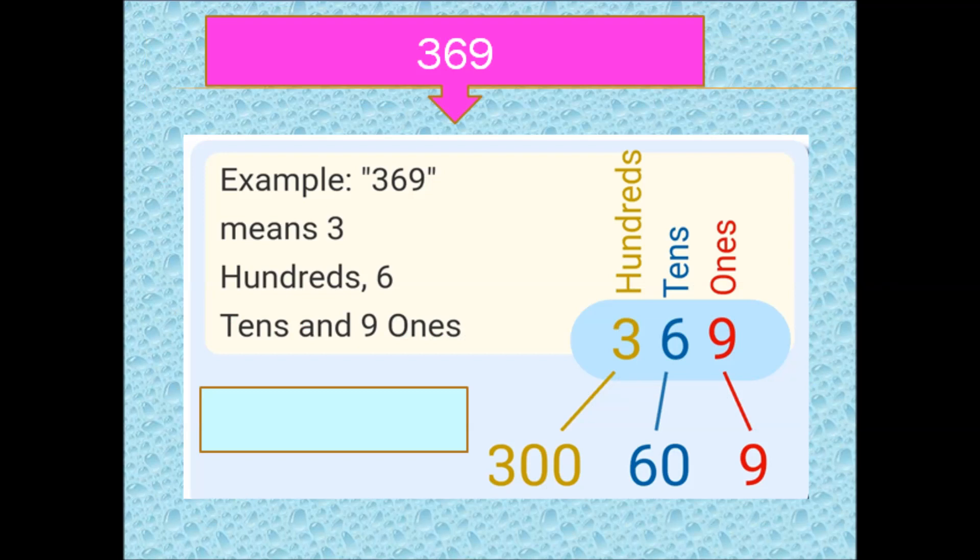For example, in the number 369, it has 9 in 1s place, 6 in 10s place, 3 in 100s place. So we can say, the place value of number 9 is 9.